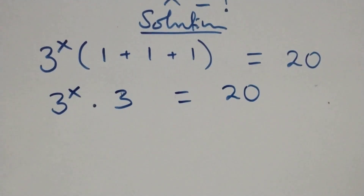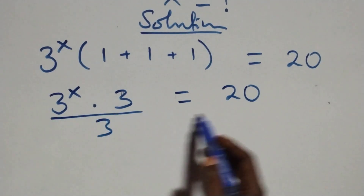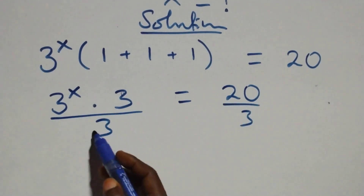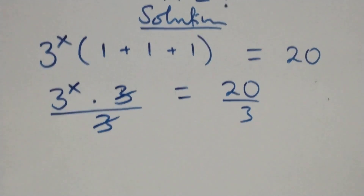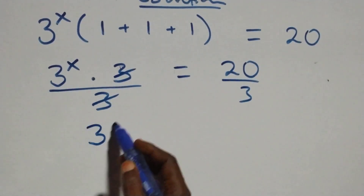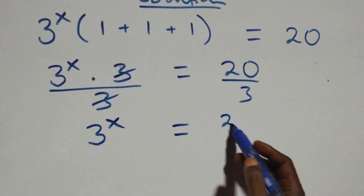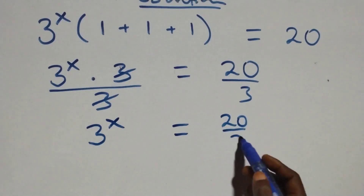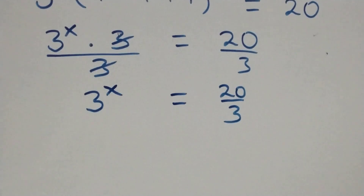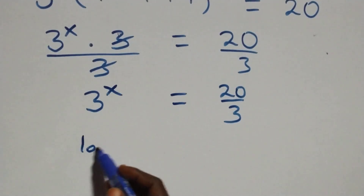The next step: we divide both sides by 3. That is, divide this side by 3 and also divide this side by 3. The 3s cancel each other and we have 3 raised to power x equals 20 over 3.